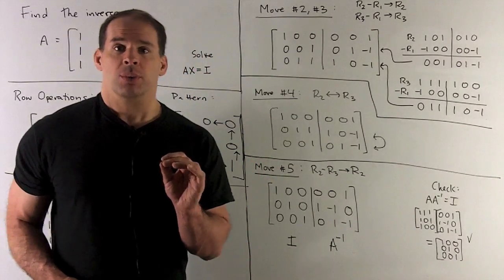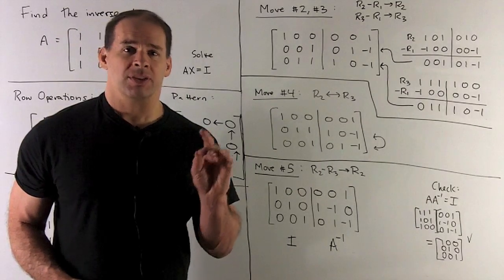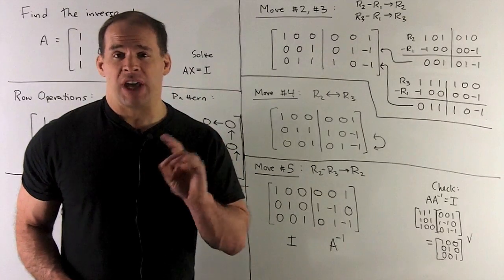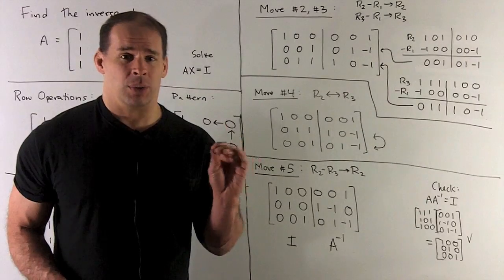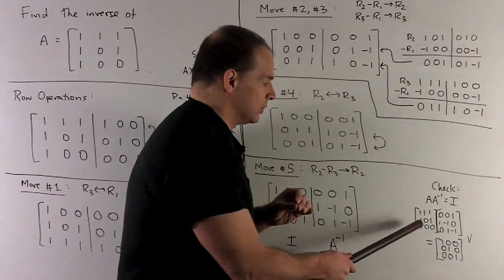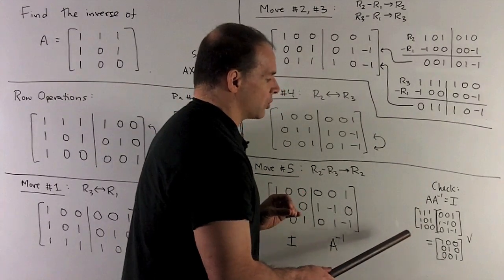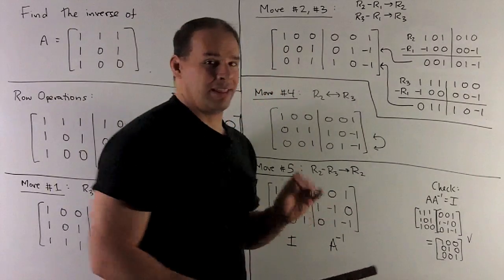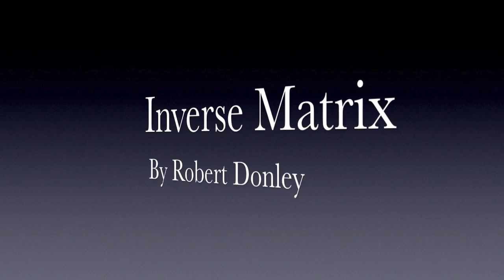Now of course we check our work. The idea is that A times A inverse gives me the identity. A inverse times A also gives me the identity. I could check either one of those to check my answer. So we'll do A times A inverse, see what comes out. When we do that, what do we get? Well, if you work out using your matrix multiplication, you're going to see when you do your nine operations, you're going to get the identity matrix. So our check works.